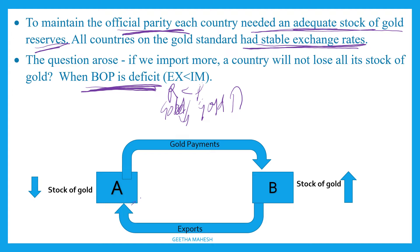Consider two countries, Country A and Country B. Country A is importing from Country B, meaning Country B is exporting to Country A. Country A makes payment in terms of gold, since gold is the medium of exchange. By exporting, Country B accumulates more gold, so the stock of gold in Country B increases, while the stock of gold in Country A decreases.